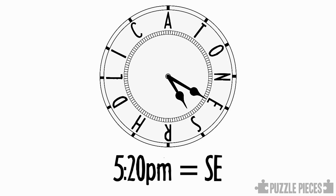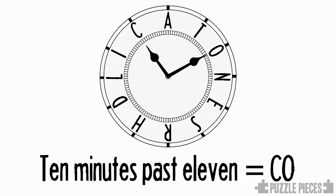Looking up the next time, that's 10 minutes past 11. So setting the hour hand to the 11 and the minute hand to 10 past, we then get the letters C O.